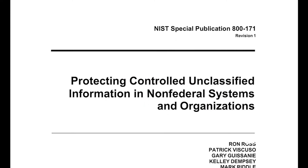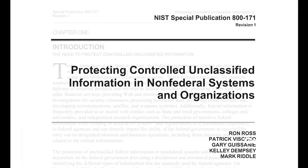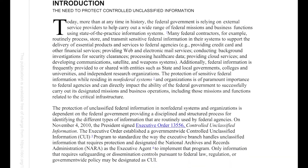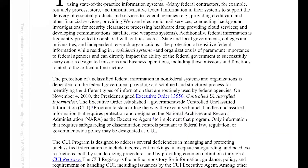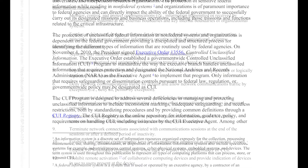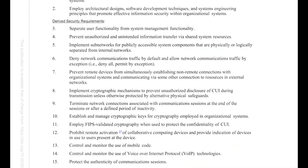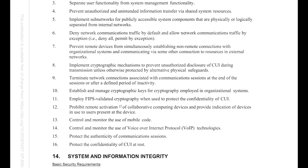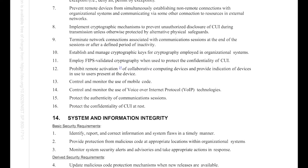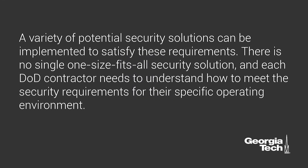NIST Special Publication 800-171 was developed to outline a set of security requirements that should be implemented to protect contractor information systems. The NIST security requirements are organized into 14 families and 110 separate security requirements. A variety of potential security solutions can be implemented to satisfy these requirements. There is no single one-size-fits-all security solution, and each DOD contractor needs to understand how to meet the security requirements for their specific operating environment.